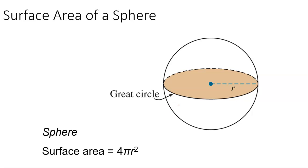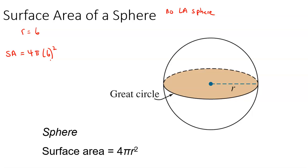The surface area for a sphere is simply 4 pi r squared. Suppose you have a sphere with a radius of 6. There is no lateral area for a sphere because it doesn't have a base. The total surface area is 4 times pi times 6 squared: 36 times 4 equals 144, so the surface area is 144 pi square meters.